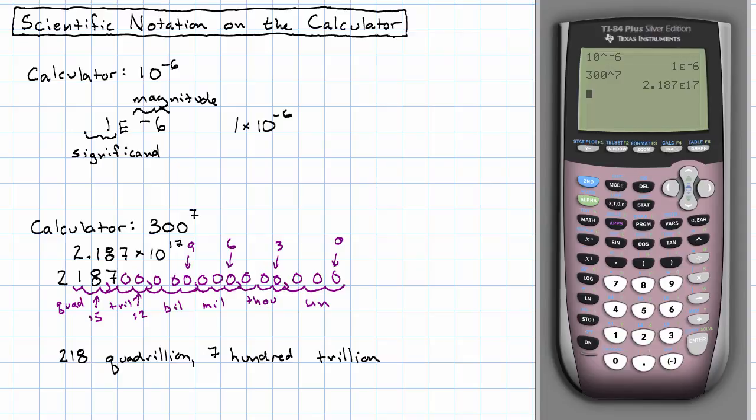Now, in real life, if I wanted to say the name of this number, what would I call it? 2.187 times 10 to the seventeenth. I would say its name in scientific notation because it's so much easier to understand.